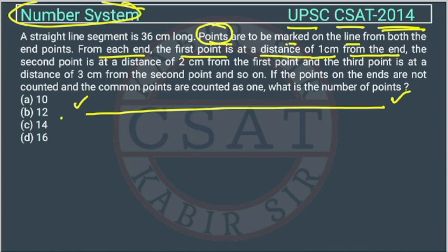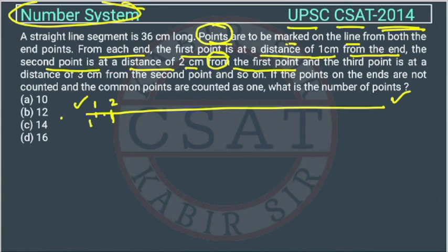So the first point is at a distance of 1 centimeter. The second point is at a distance of 2 centimeters from the first point. So the total distance from the start will become 1 plus 2, which is 3.